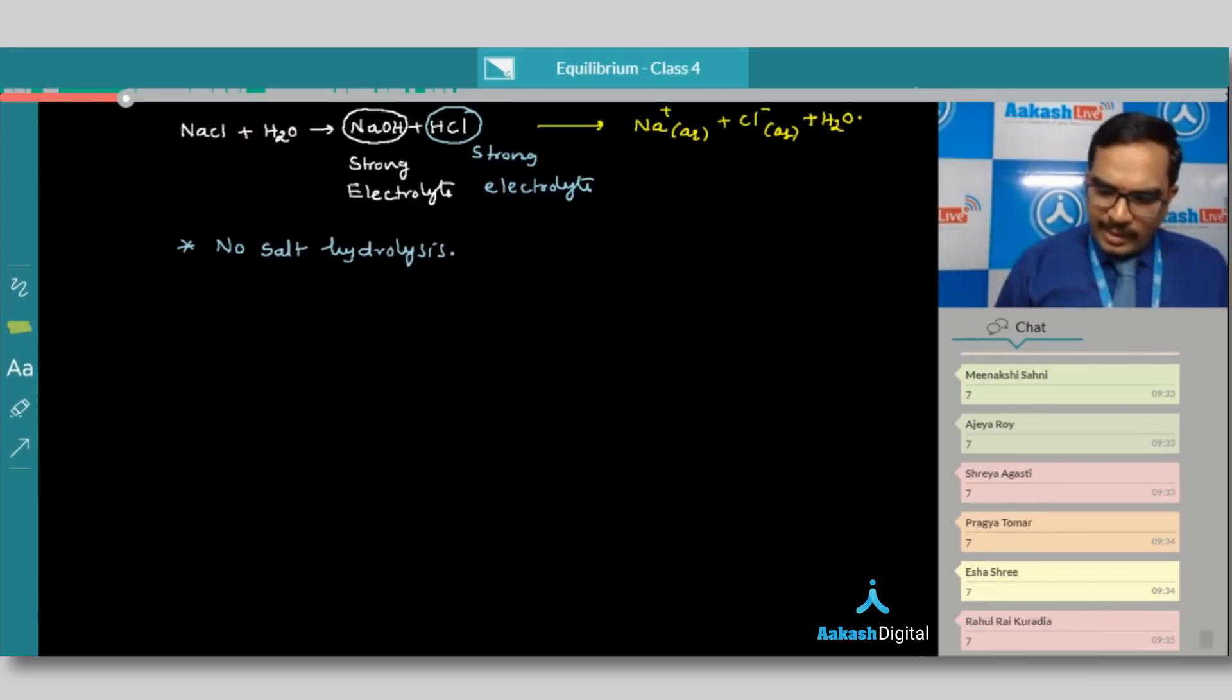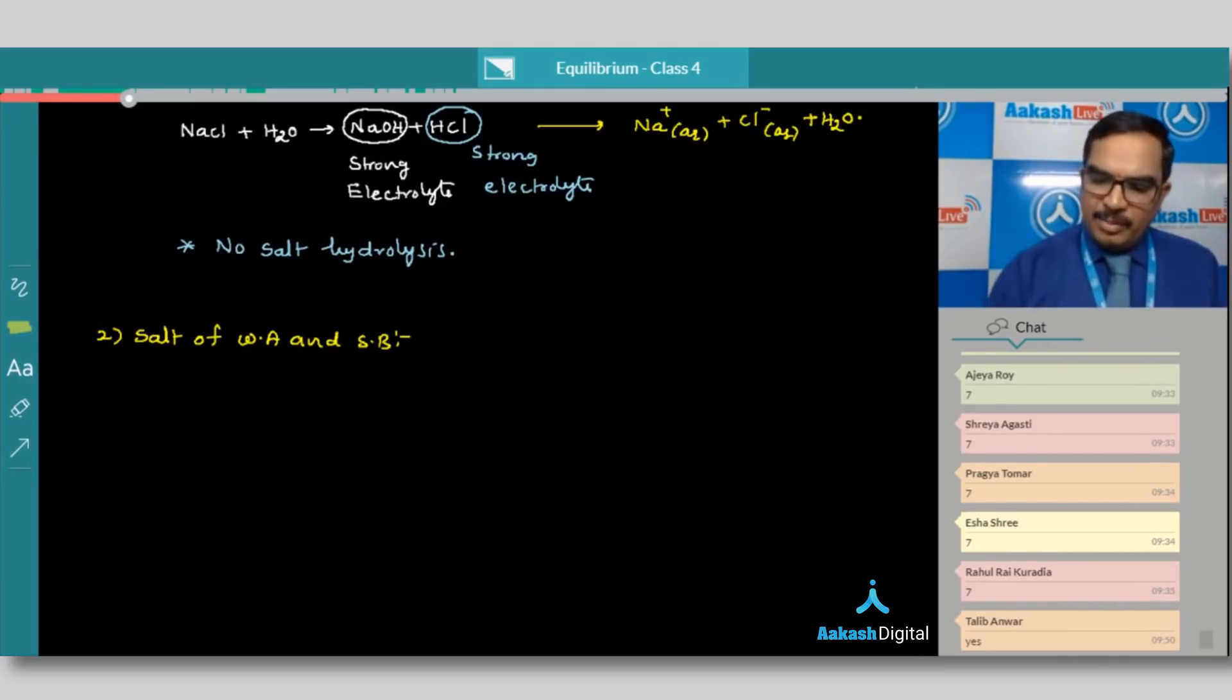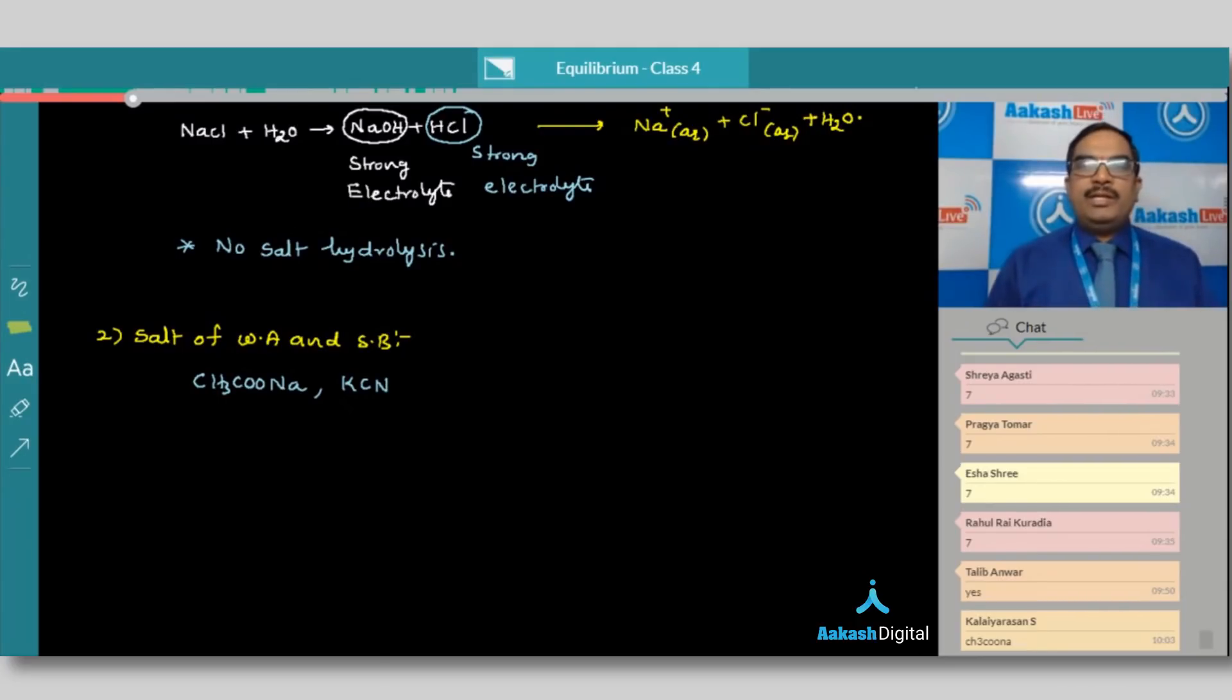Let us move to category 2. Salt of weak acid and strong base. In this case, for example, let me take sodium acetate. Of course, we can also take potassium cyanide. In the case of sodium acetate, it is formed by the reaction between acetic acid and sodium hydroxide.